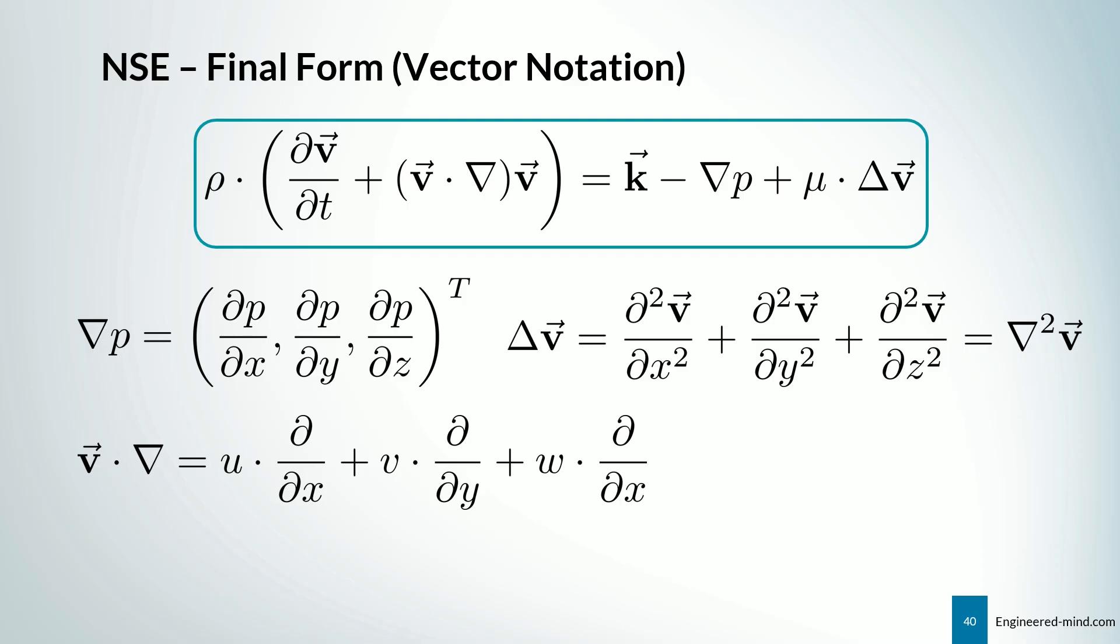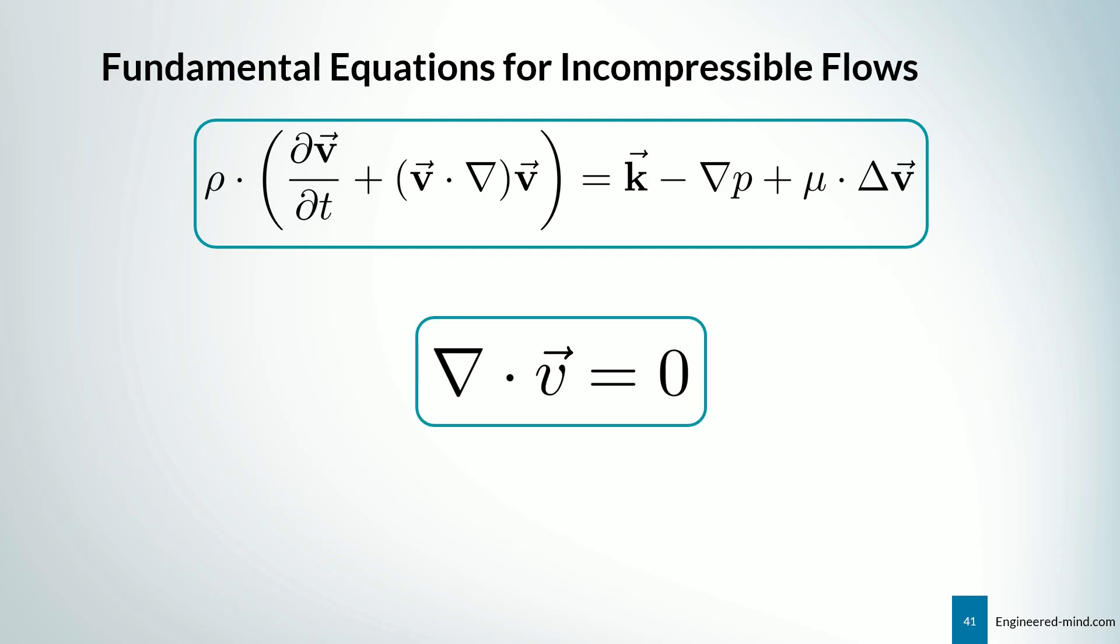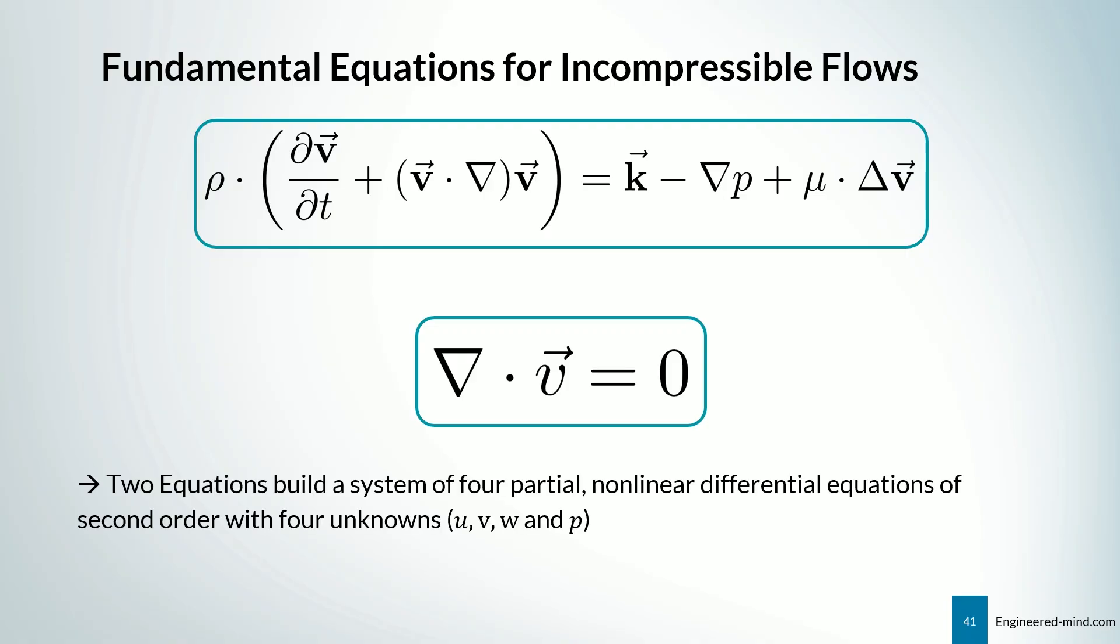So I hope this is clear so far. Let's move on. So for an incompressible flow, we have the fundamental equations which look like this. We have, of course, our Navier-Stokes equations plus the mass continuity equation, as you can see on the bottom. So what we get are two equations that build a system of four partial nonlinear differential equations of second order, where we have four unknowns, namely u, v, and w, as well as our pressure, p.